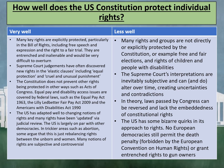Supreme Court judgments have often discovered new rights in the elastic clauses, including equal protection and cruel and unusual punishment. The Constitution does not prevent other rights being protected in other ways, such as acts of Congress. Equal pay and disability access issues are covered by federal laws such as the Equal Pay Act of 1963, the Lilly Ledbetter Fair Pay Act of 2009 and the Americans with Disabilities Act of 1990. The US has adapted well to the changing notions of rights, and many rights have been updated via judicial review.